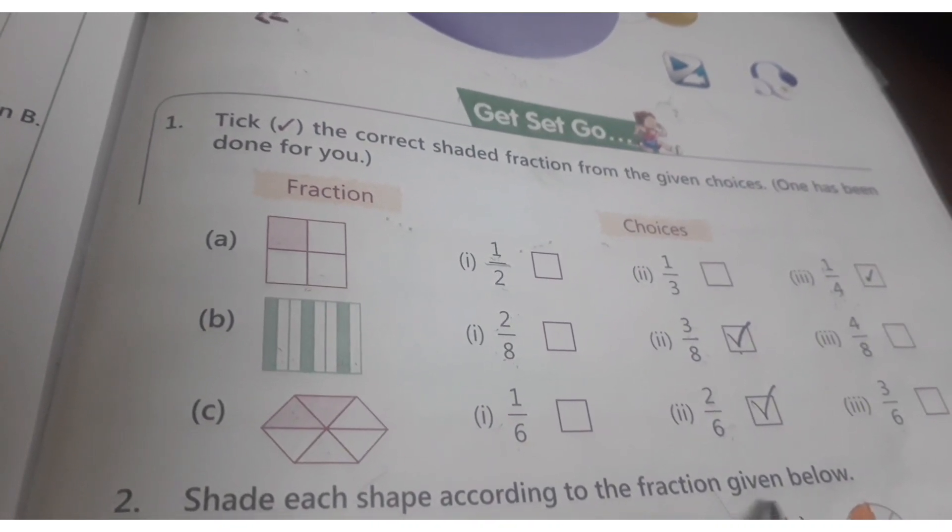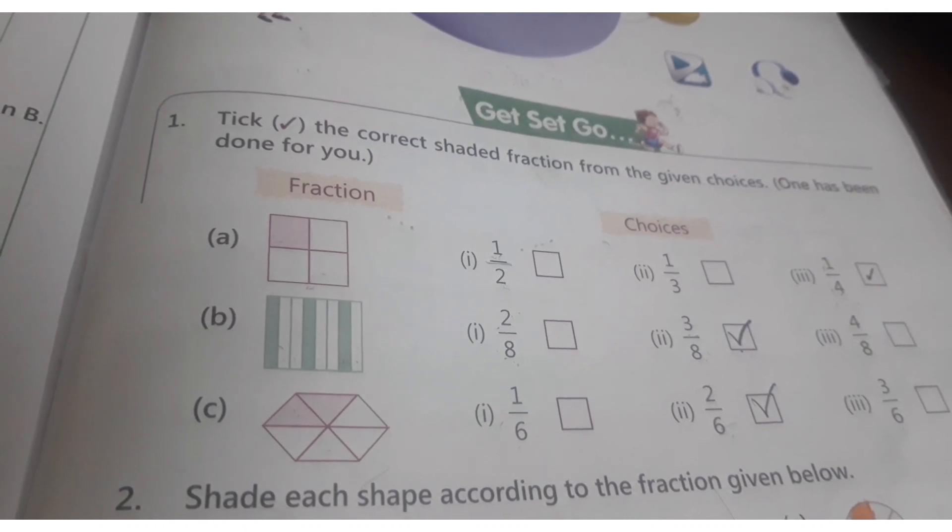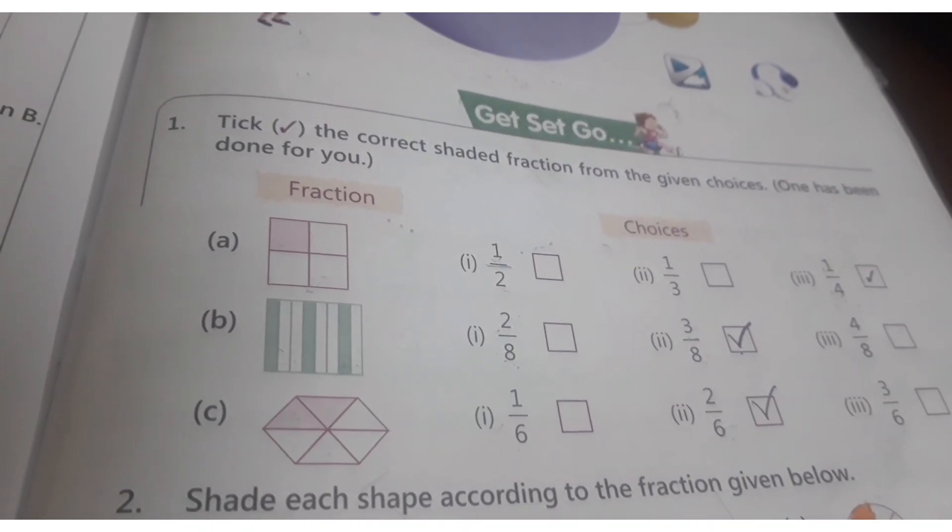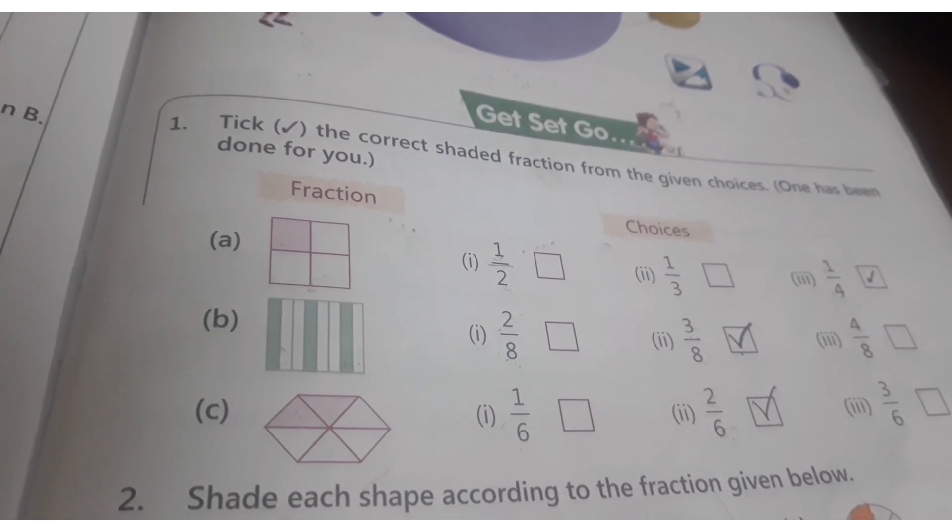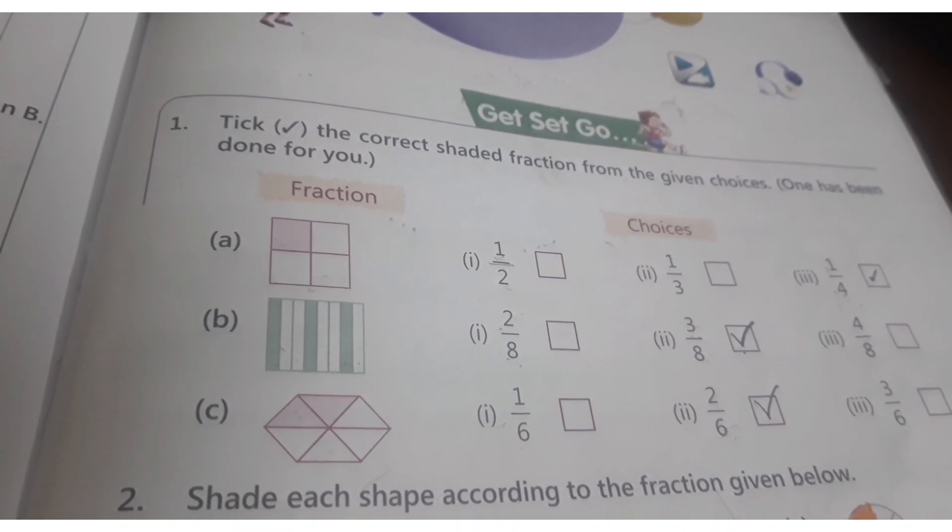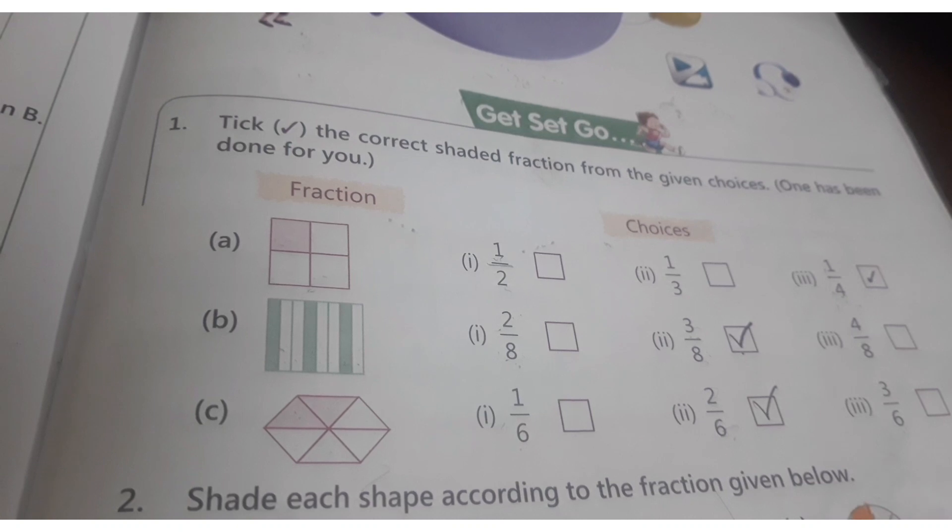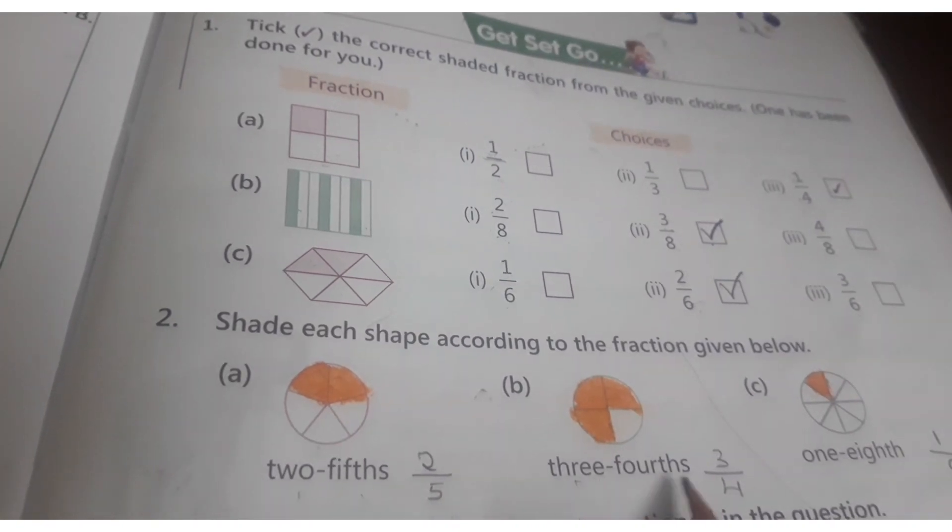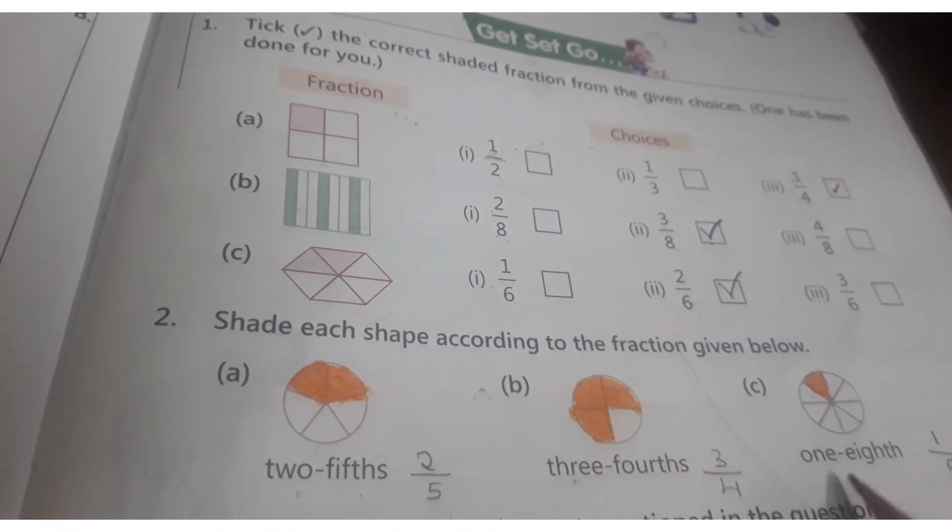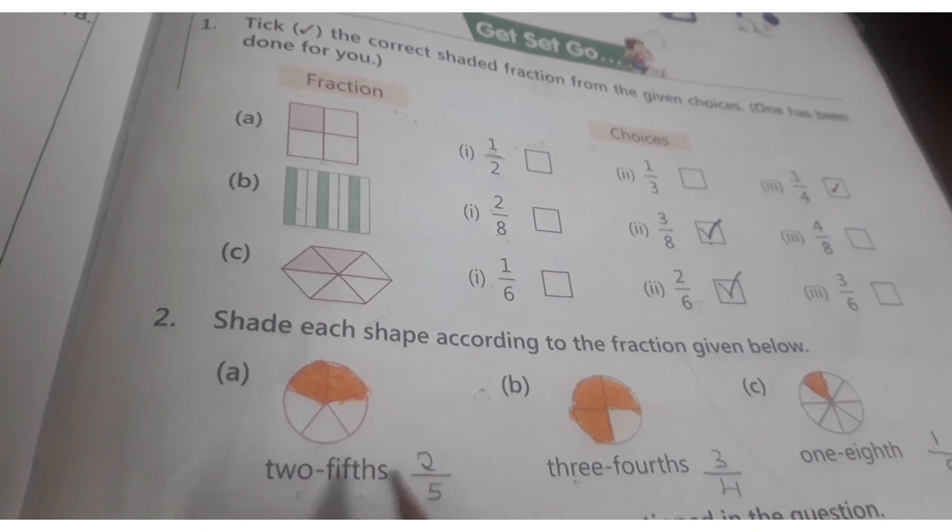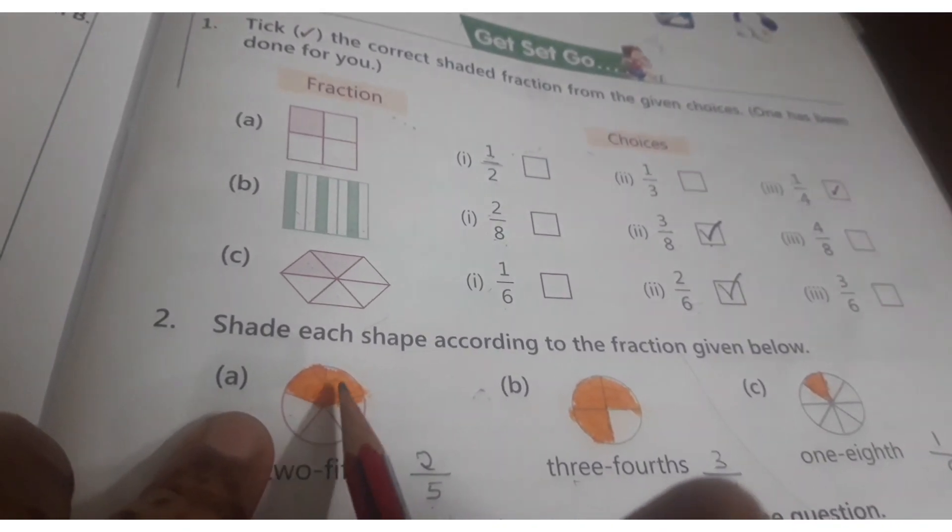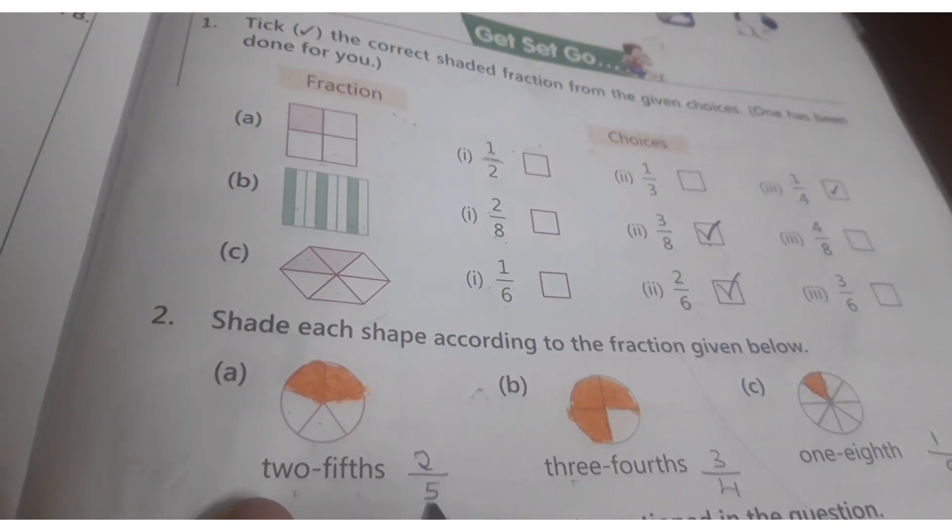Shade each shape according to the fraction given below. 2/5th means 2 by 5. 3/4ths means 3 by 4. 1/8th means 1 by 8. This way we have to write. So here it means 5 boxes hai. 1, 2, 3, 4, 5. She is done already, I am just explaining.